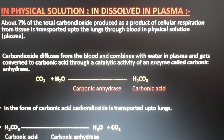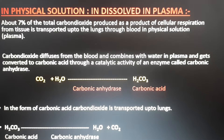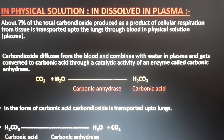Carbon dioxide combines with water to form carbonic acid through the catalytic activity of an enzyme called carbonic anhydrase. Carbon dioxide is transported to the lungs in the form of carbonic acid, and when it reaches the lungs, the carbonic acid releases carbon dioxide, which diffuses into the air sacs — also called alveoli — and is expelled through the lungs by a process called exhalation.